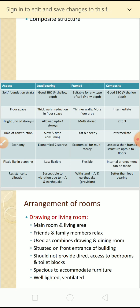The second aspect is floor space. In load bearing structure, because you are constructing thick walls, there is a reduction in floor space - the wall area is more. Whereas in framed structure, the wall is not a structural member, so wall thickness is very less compared to load bearing structure, and floor area is more. For composite structure it is intermediate.